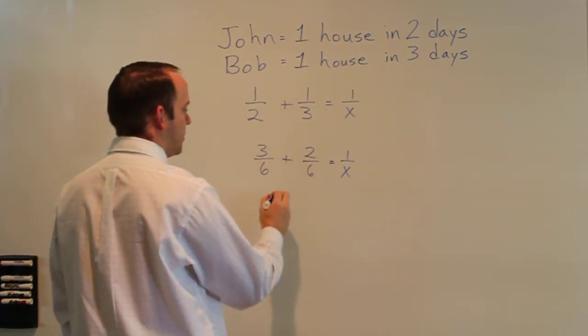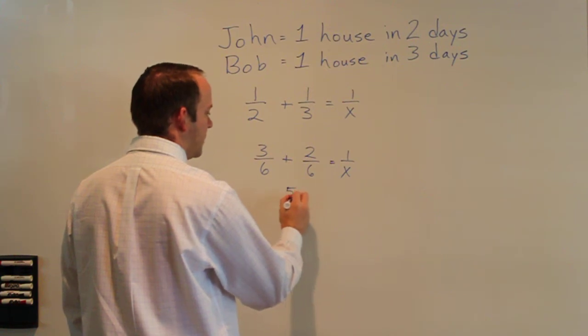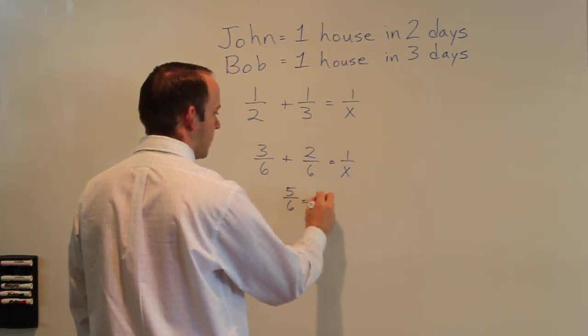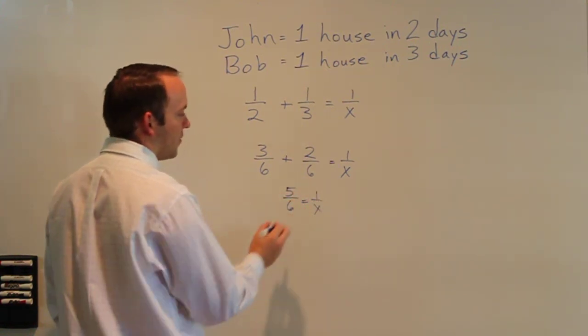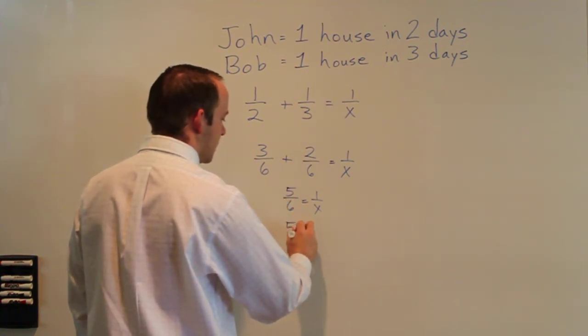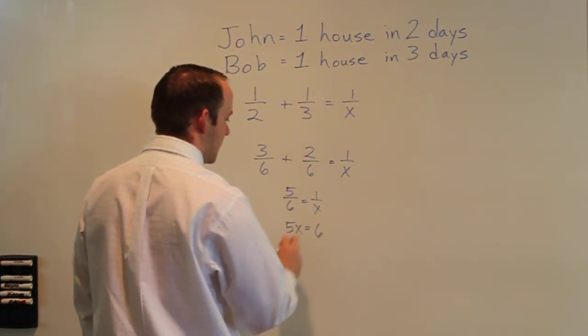Three-sixths plus two-sixths equals five-sixths. Now to solve for x we can cross multiply which gives us five x equals six.